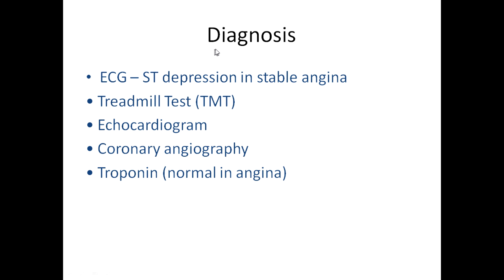For diagnosis, the most common and available test is ECG — in stable angina we see ST depression. Other important tests include the treadmill test, echocardiogram, coronary angiography, and the troponin test, which detects troponin protein released from damaged heart muscle. These five tests are what any cardiologist will perform to detect angina.